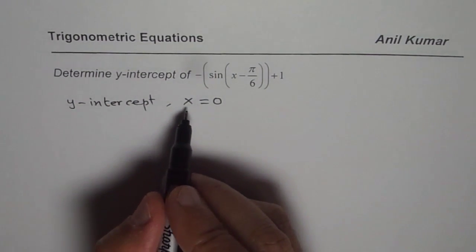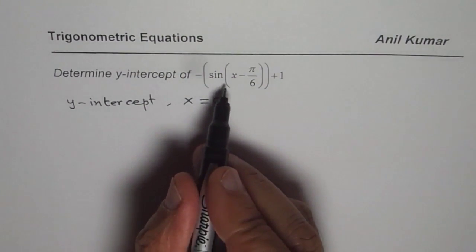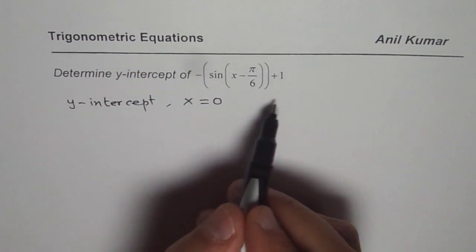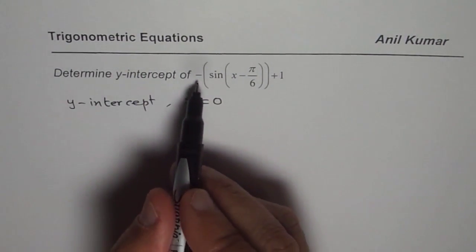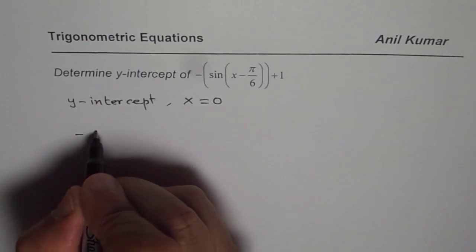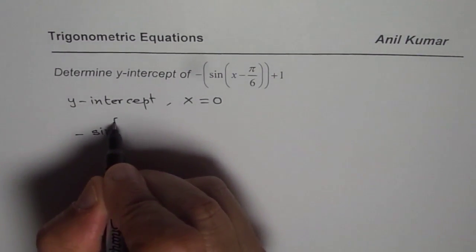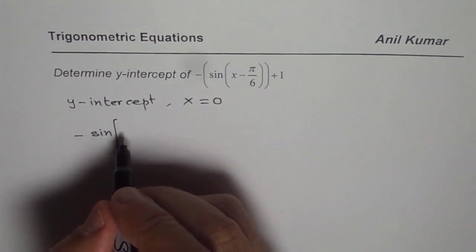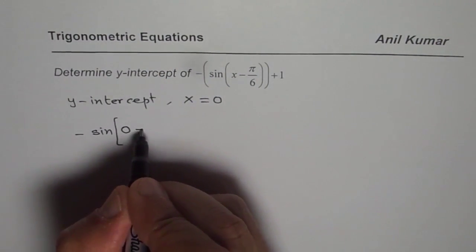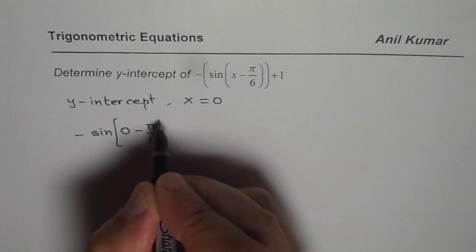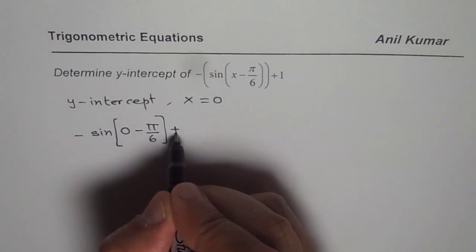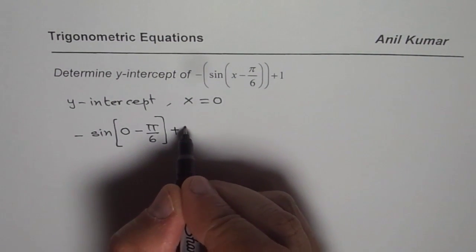To find y-intercept, I should just substitute x equals to 0 in whatever equation or expression I have. So here we have minus sine of x minus π/6, and instead of x I will write 0 minus π/6, plus 1. Do you get the idea?